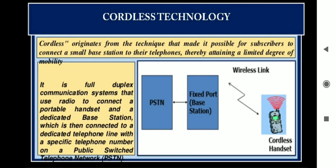As shown in the block diagram, there is a full duplex system, which is why we have discussed the definition regarding the duplex system. The base unit of the cordless phone is plugged into the telephone jack on your wall.